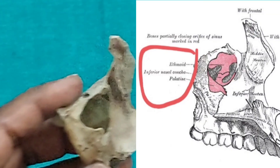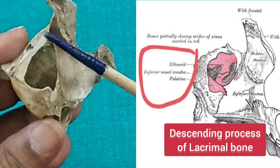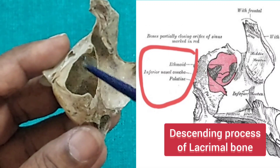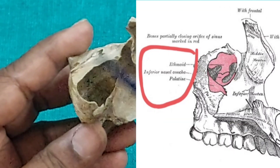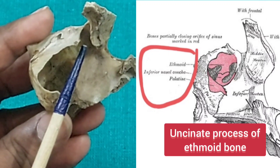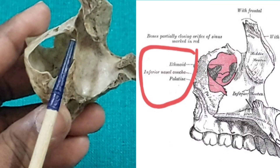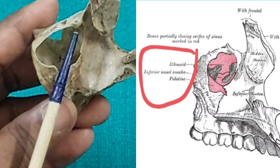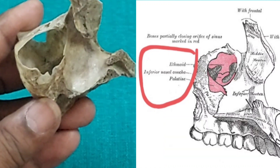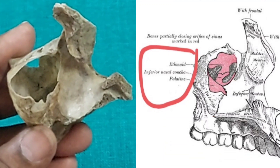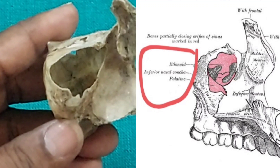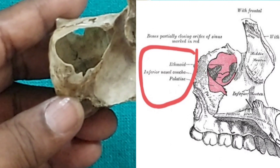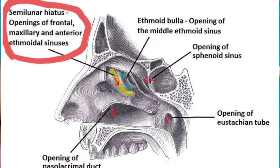These bones, along with the nasal mucous membrane, close the maxillary hiatus, leaving a small foramen called the ostium. Through this ostium in the articulated skull, the maxillary sinus opens into the middle meatus of the nose.